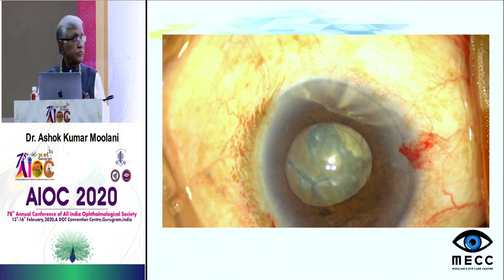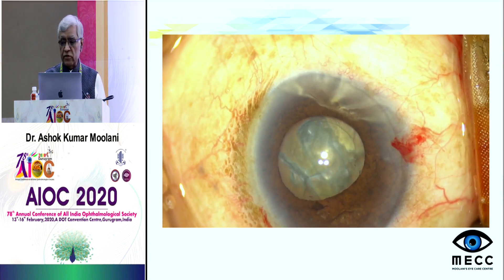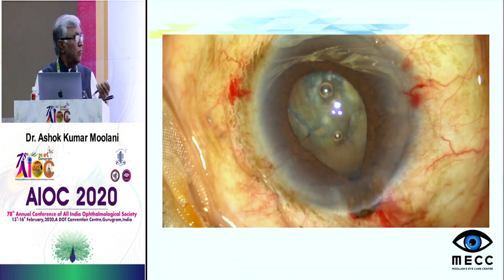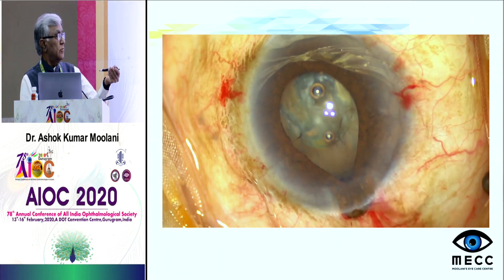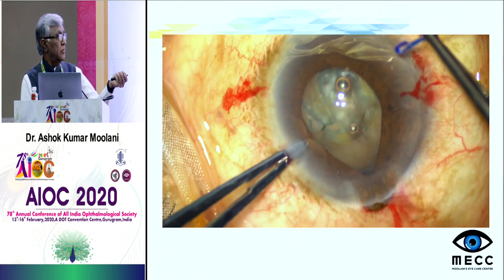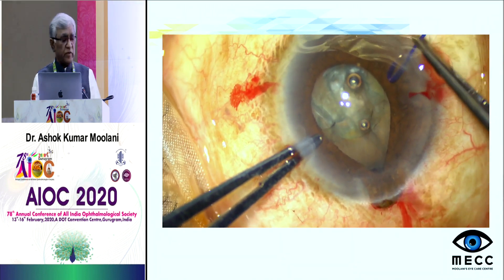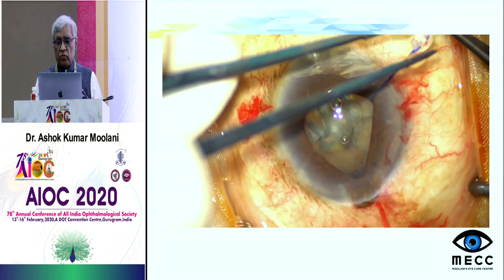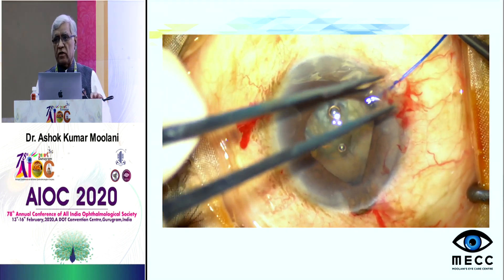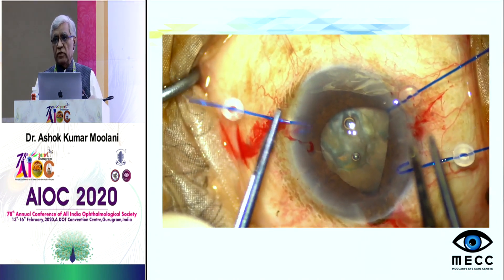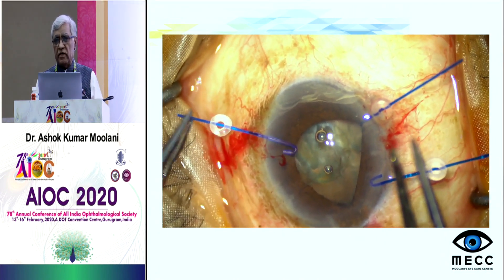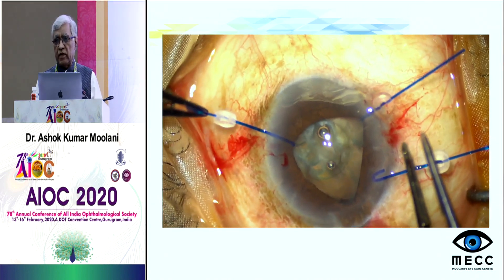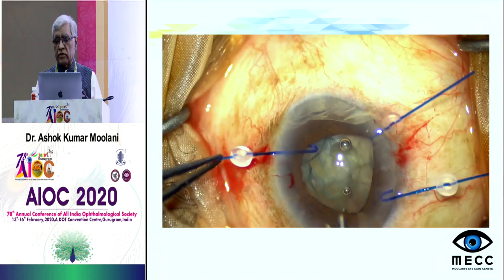Here is a patient with IFIS syndrome where there is prolapsing of the iris. You can see the prolapse occurring from the main port. I am managing this using iris hooks. When using iris hooks, you must place them parallel to the iris. If you indent them from the corneal side, you will get tilting of the iris and restriction of management with obstruction from instruments.